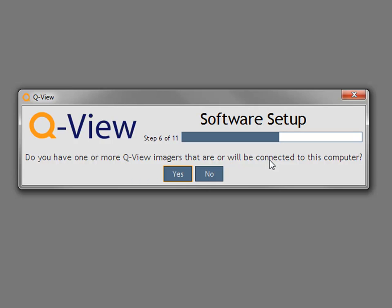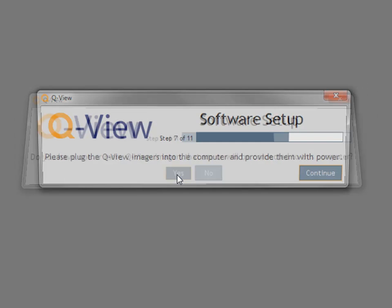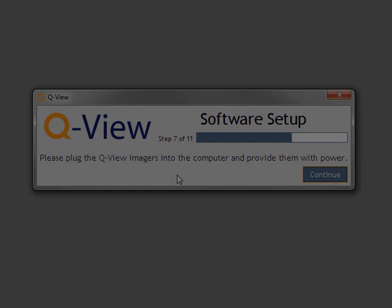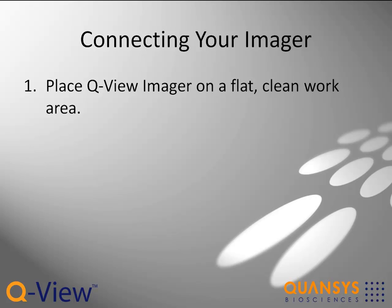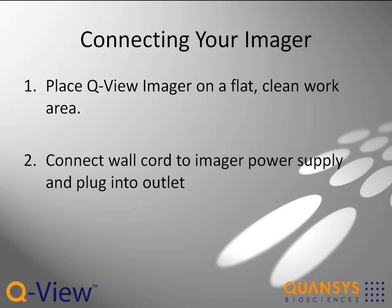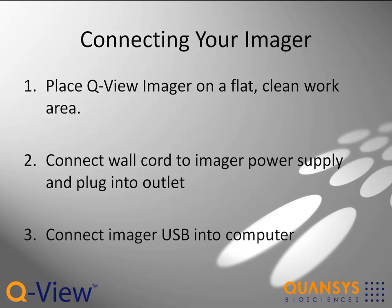Finally, connect and calibrate your imager. If you do not need to connect and calibrate an imager, click No to launch the software. If you have a QView imager to connect, click Yes. To connect a QView imager to your computer, first place the imager on a flat, clean work area. Connect the wall cord to the imager power supply, plug the wall cord into a surge protector, then connect the imager USB cord into your computer.